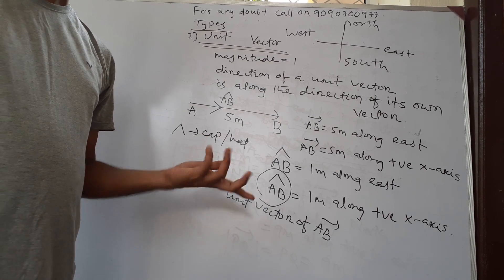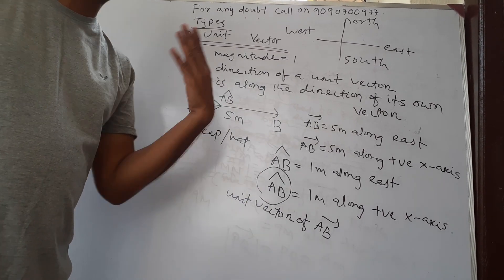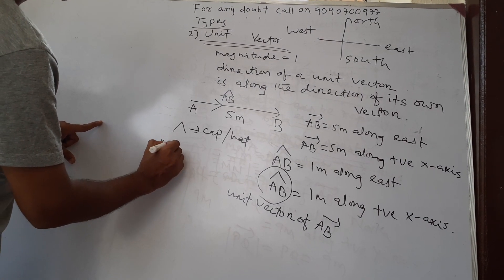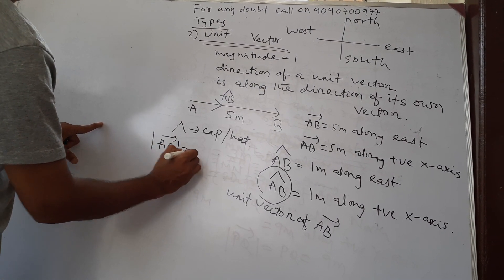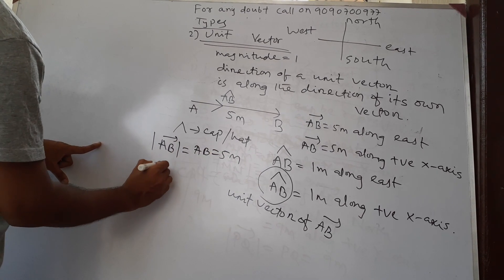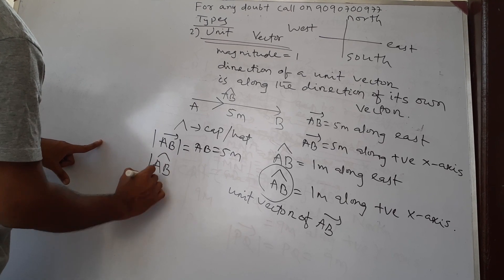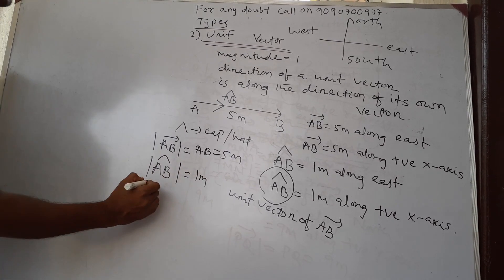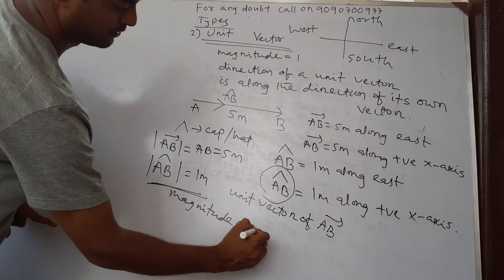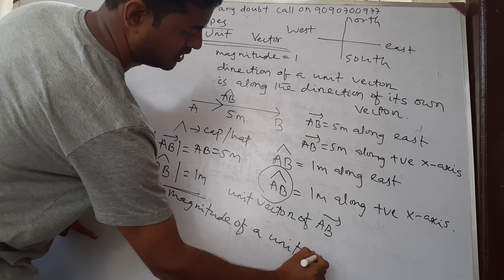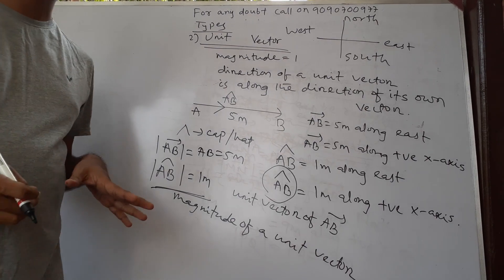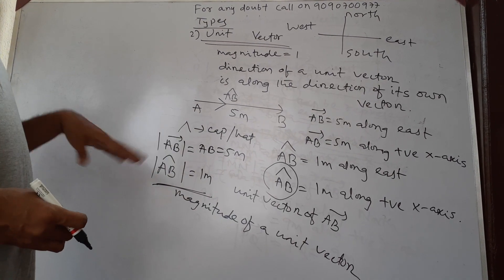If I am talking about vector AB, its magnitude |AB| equals 5 meters. But if I talk about the unit vector AB-hat, its magnitude equals 1 meter. This represents the magnitude of a unit vector. I hope everyone is clear.